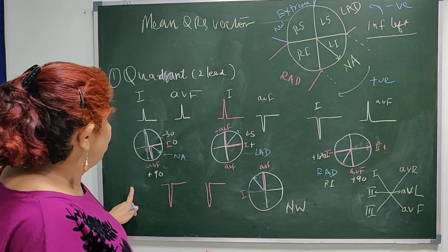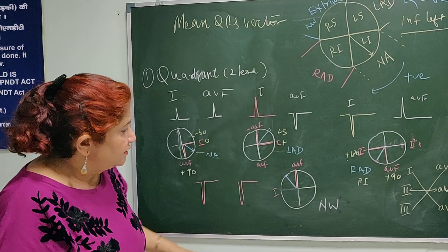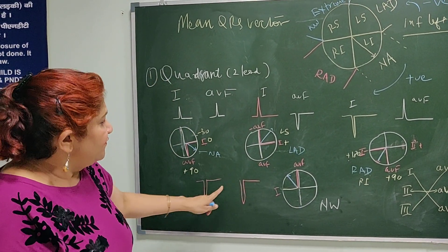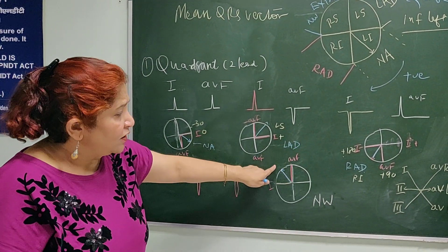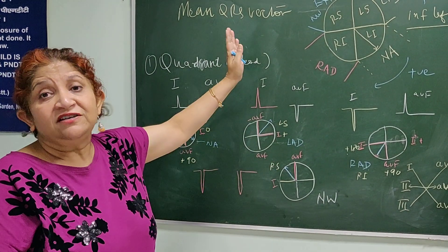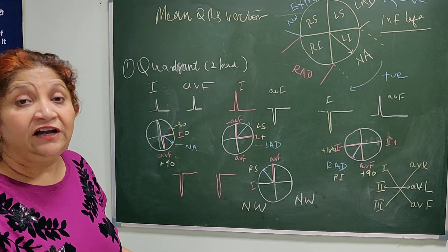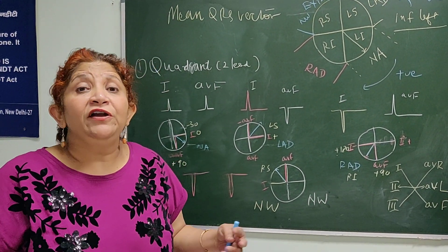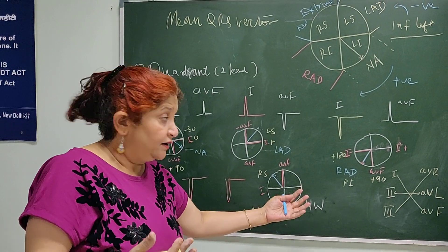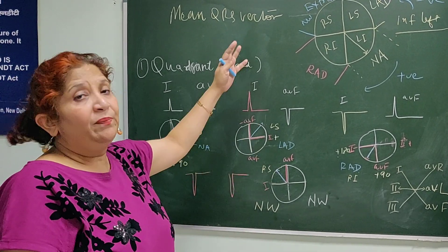In the fourth situation, Lead 1 is negative and AVF is also negative. The vector is in the right superior quadrant — this is extreme axis deviation, also called northwest axis deviation. This generally occurs in ventricular rhythms, when the rhythm originates from the lower ventricle and travels upward toward the AVR lead, making the QRS upright in AVR.